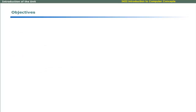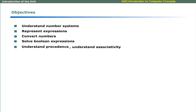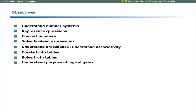Dear learners, after completing this unit, you should be able to understand number systems, represent numeric and alphanumeric expressions in number systems, convert a whole and fractional number from one number system to another, solve Boolean expressions, understand precedence and associativity of logical operators, create truth tables, and solve and interpret truth tables and understand the purpose of logical gates.